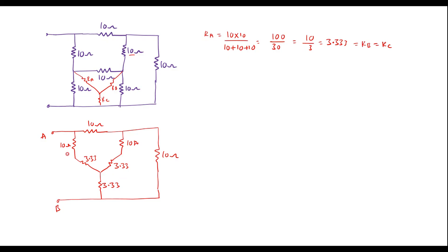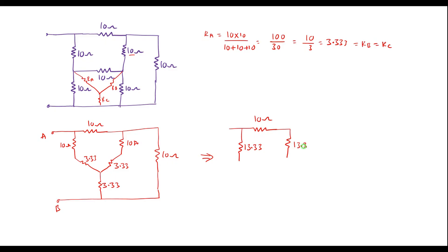Now here we can observe that this 10 ohm and 3.33 ohm are in series. Similarly, these two are also in series. Let me replace these two resistors by a single resistor, as these two are in series. Let me redraw the circuit. That is here we have 10 plus 3.33, which is 13.33 ohm. Similarly, these two in series can be replaced as 13.33 ohm.